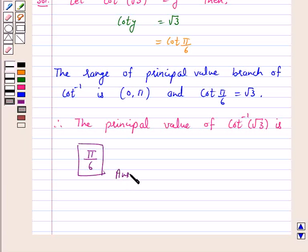That is, the principal value of cot inverse root 3 is pi by 6.